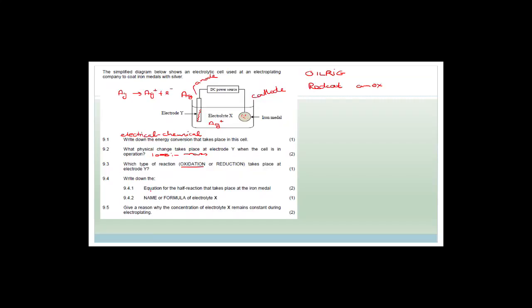Write down the equation for the half reaction that takes place at the iron metal. The half reaction is that Ag⁺ gains an electron to form Ag. What's happening is the Ag electrode forms Ag⁺ ions and gives away an electron. The electron flows around the circuit to the iron metal, which becomes negatively charged. The Ag⁺ ions in the electrolyte are attracted to this negative iron metal, allowing silver to form on it.